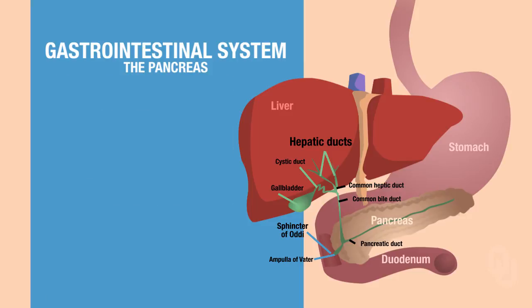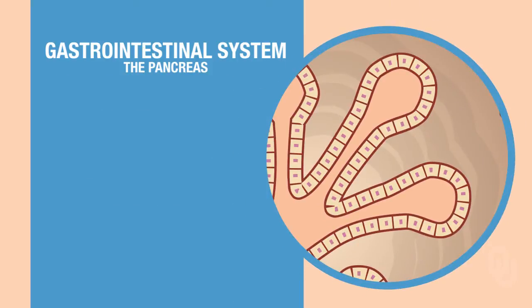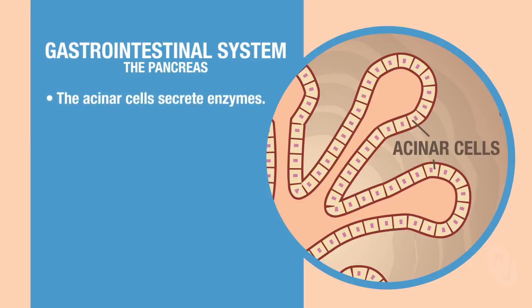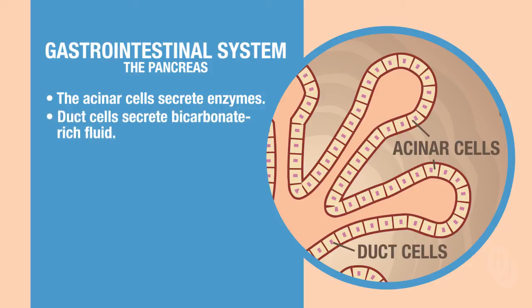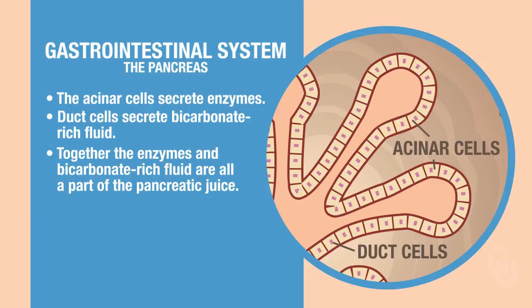When you look at the pancreas, and we zoom in here to the cells inside the pancreas, here are the acinar cells that secrete some enzymes. And you have these duct cells — different types of cells in the pancreas that secrete bicarbonate fluid. Together, the enzymes and the bicarbonate fluid are all part of the pancreatic juice.